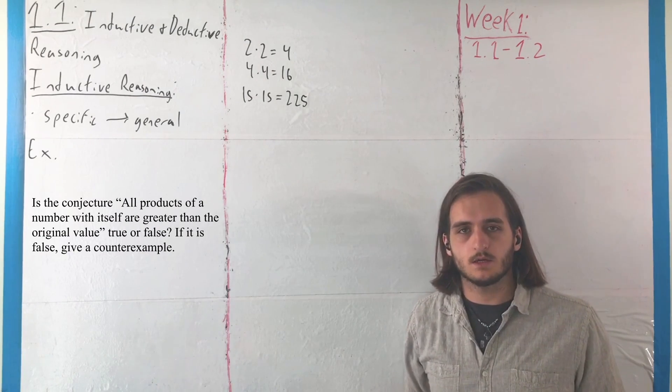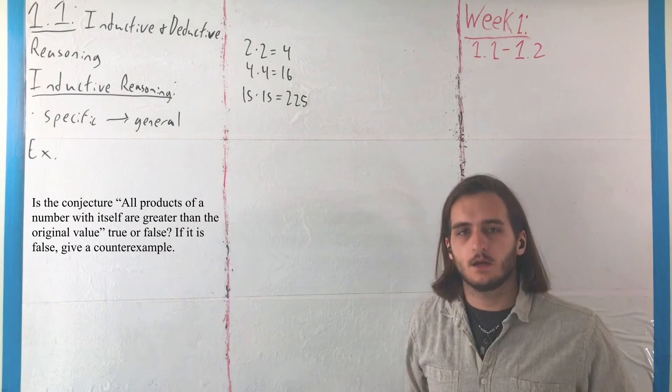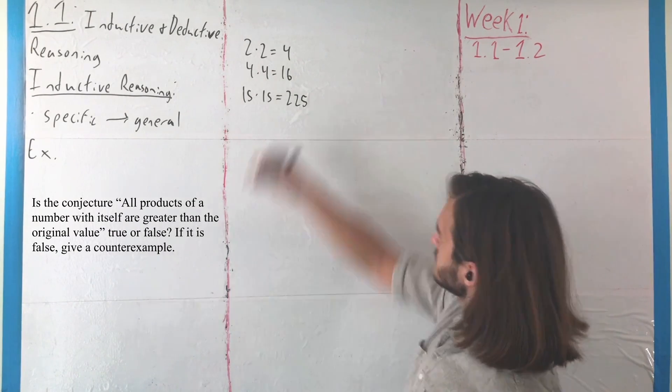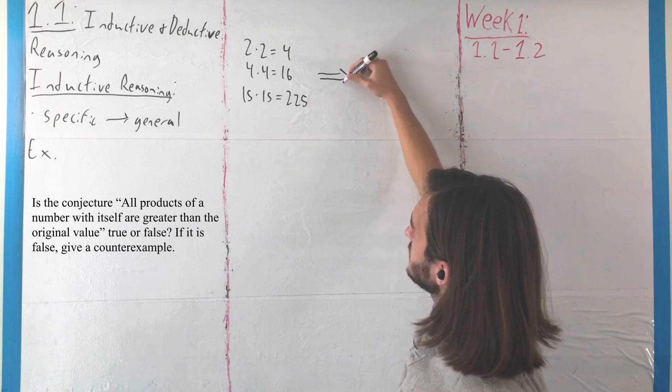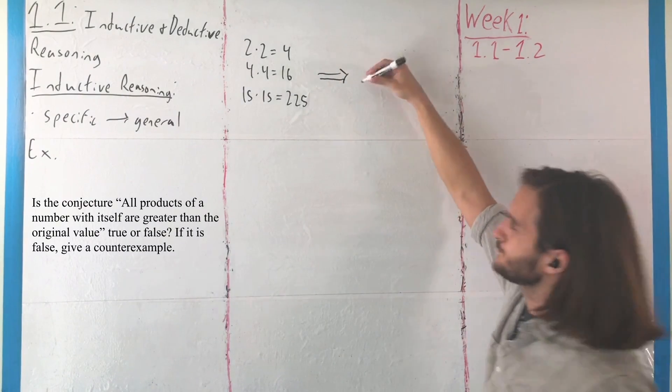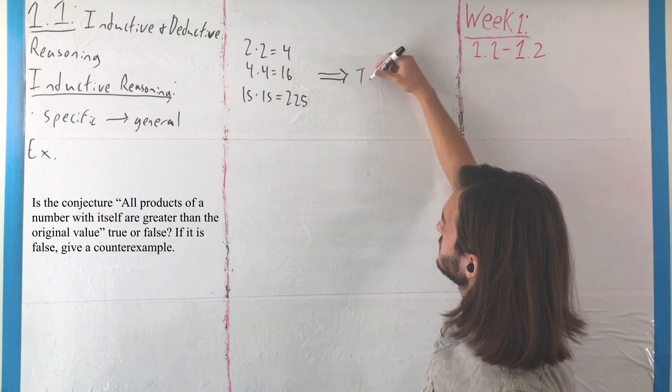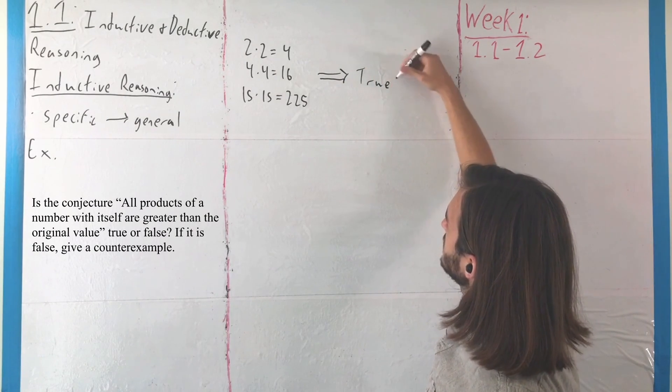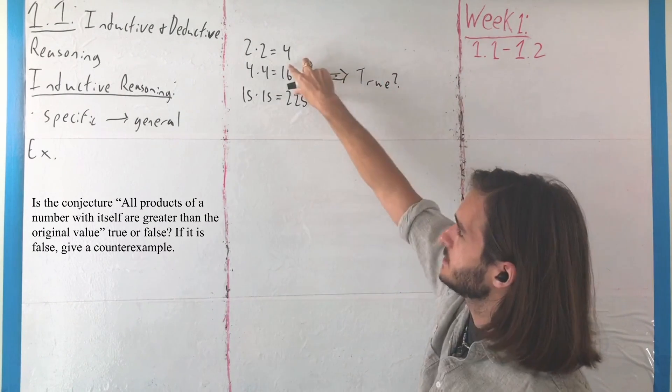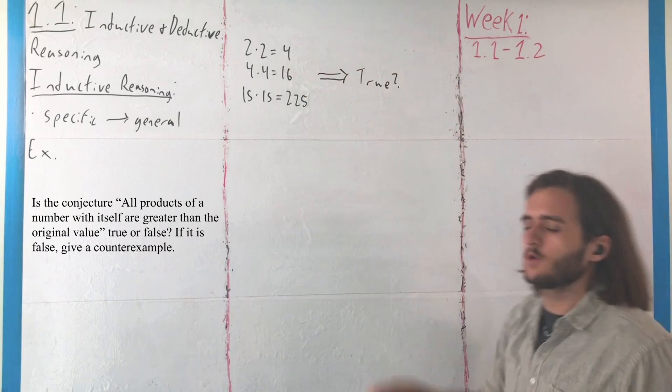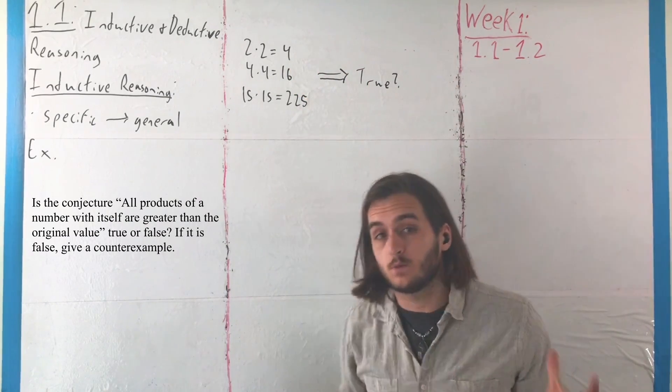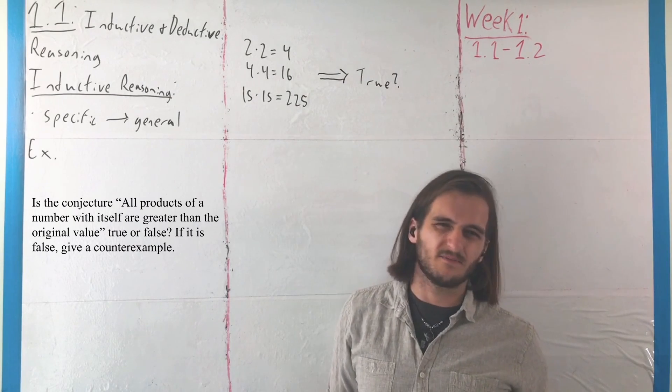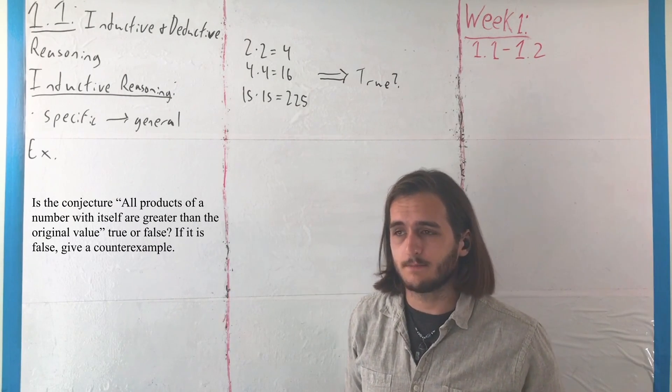And the point is, we can take any number of these examples, and we will get something that looks like our result is true. For reference, this sort of notation here, this double-lined arrow says 'implies.' So these things we think might imply that that's true, but I'm going to leave a question mark there, because we have some examples, but we only need one in order for it to not work the way that we're hoping it does.